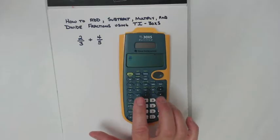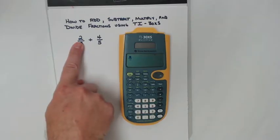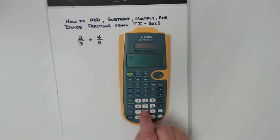I press that. The top is blinking. That means they want me to put my numerator in there. My numerator for this first fraction is 2. I put 2 in the top.